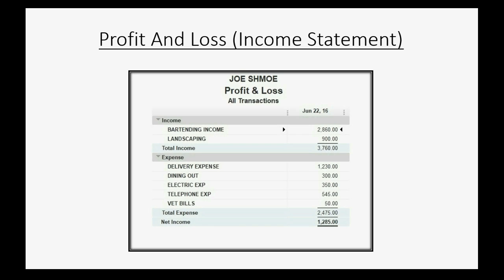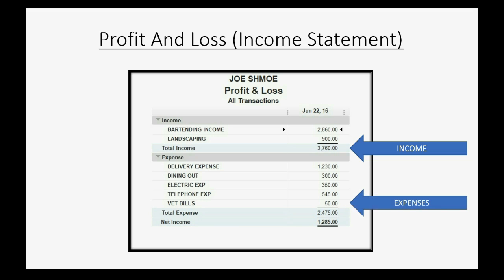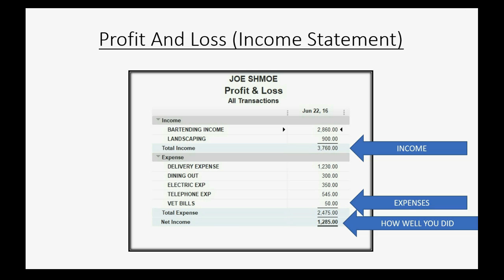The Profit and Loss is sometimes called the Income Statement. You would take the total of each of your income categories and find the total overall income. Then from the Trial Balance you would take the total of each expense category and list it in the bottom section, so that the Profit and Loss gives you your total expenses. The difference between your total income and total expenses is how well you did financially during the year — or during whatever period of time you're looking at — and that's called the Net Income.